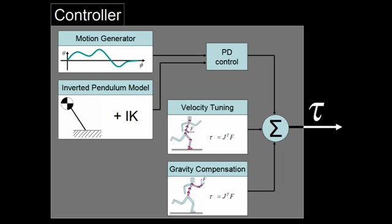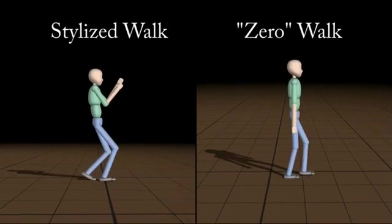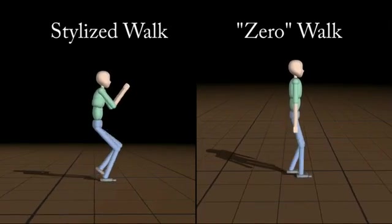Our walking control strategy has four components. A motion generator outputs target poses throughout the walk cycle and is used to produce different styles of motion.